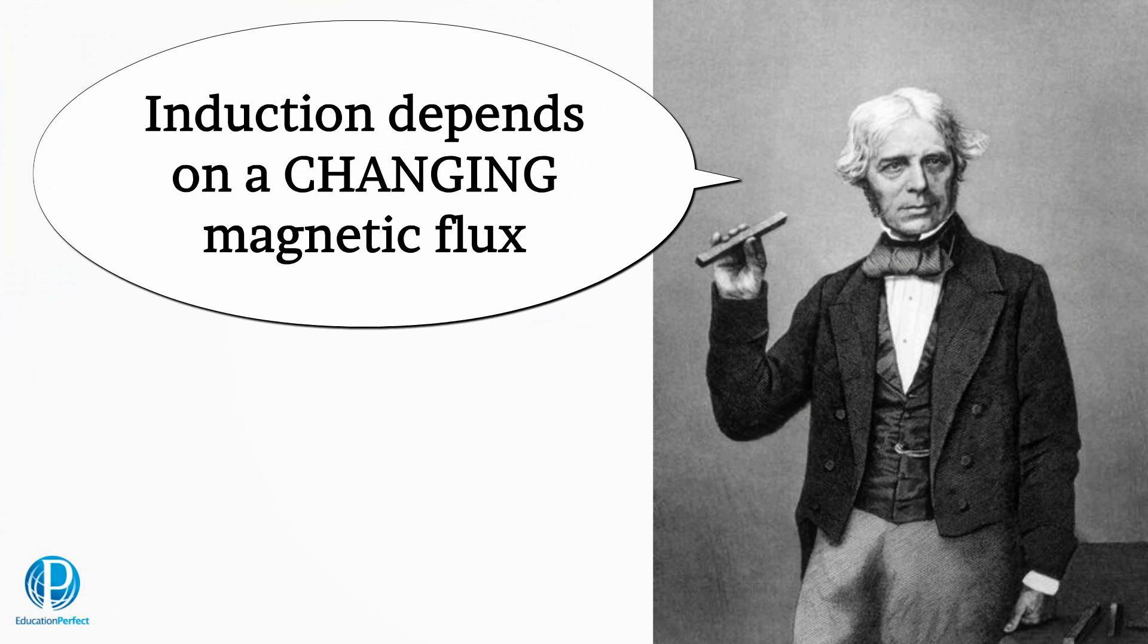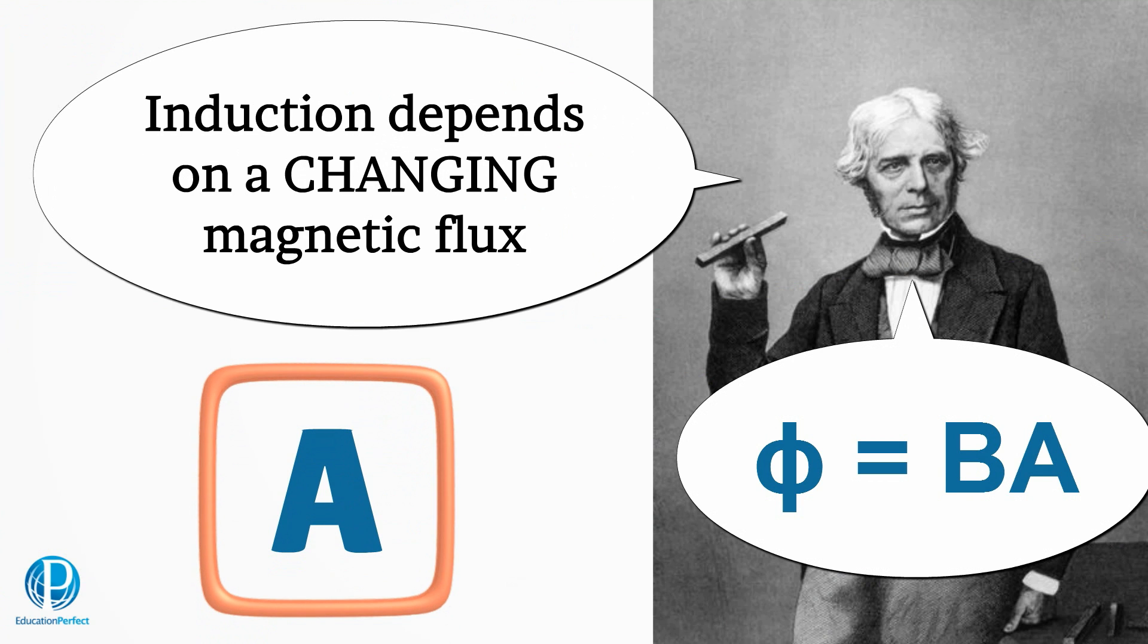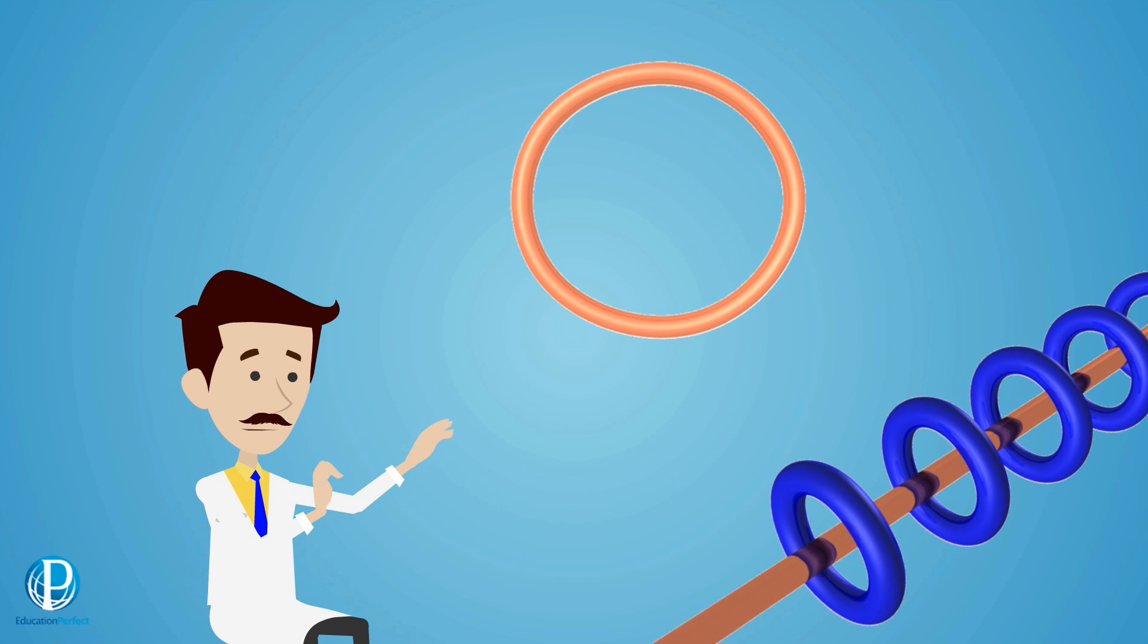Faraday saw this too, and he realized that an electric current was induced by a changing magnetic flux. Flux is given by the strength of the magnetic field multiplied by the area of the loop moving through it. In order to get a current inside the loop, the magnetic flux must change.